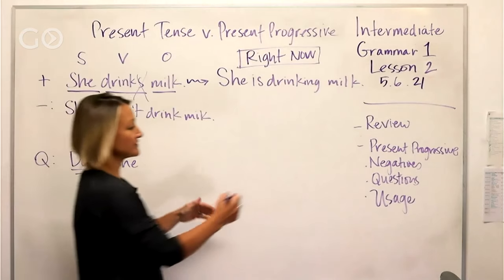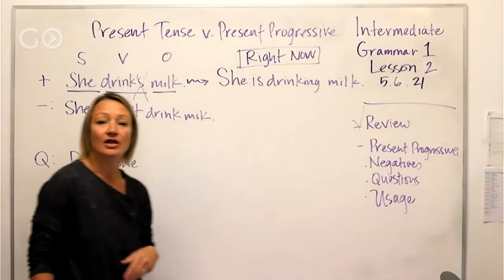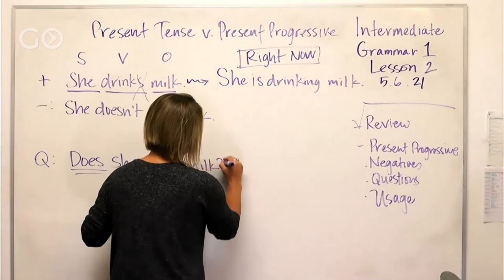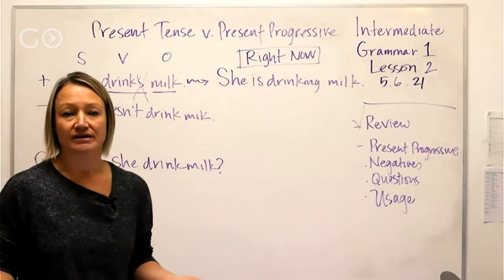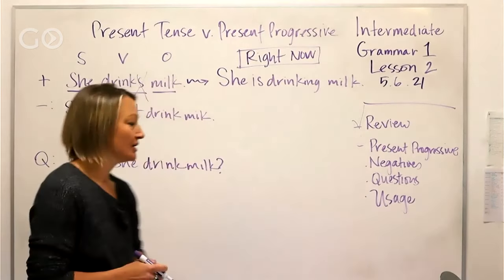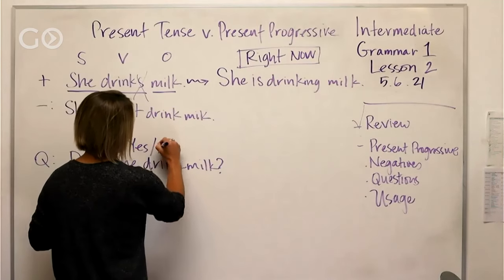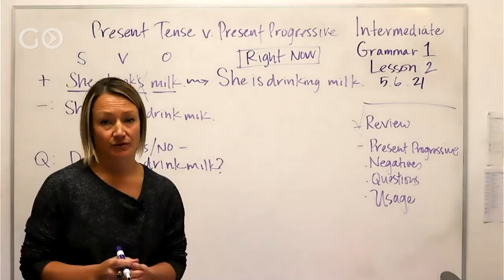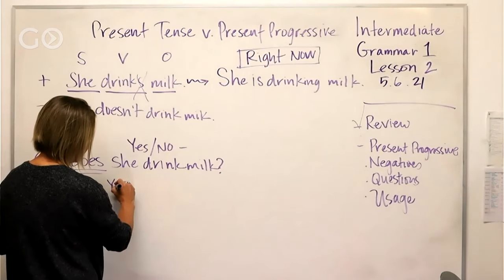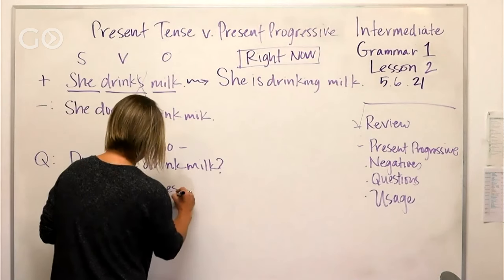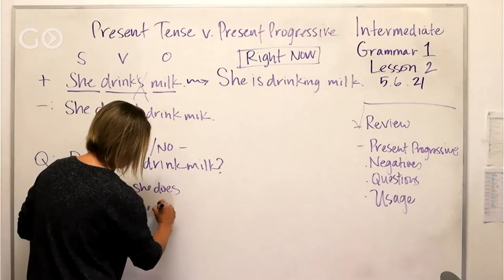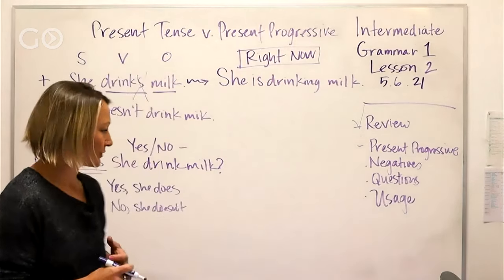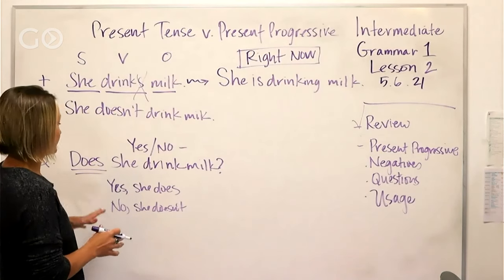So that's our review — we're reviewing the lesson from Tuesday. 'Does she drink milk?' — how do we answer? This is a yes/no question, meaning you can simply answer yes or no. You can say 'yes, she does' or 'no, she doesn't.' Or the expanded form: 'no, she doesn't drink milk.'